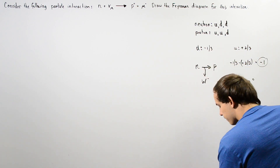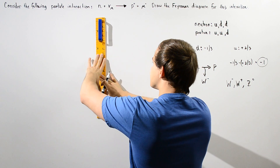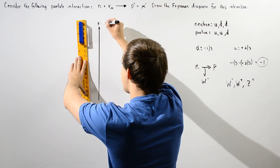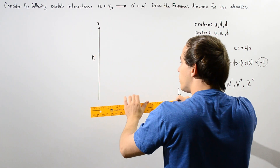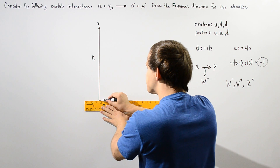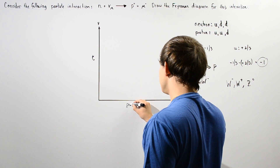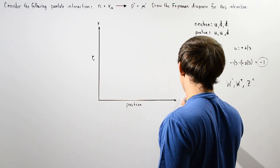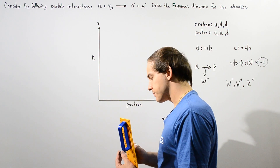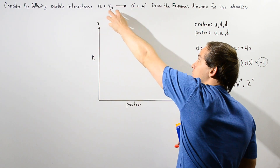Let's begin drawing our Feynman diagram. The Feynman diagram consists of a y-axis and an x-axis. The y-axis designates time, so let's draw and label that as time. The x-axis represents the position of our two interacting particles in space.